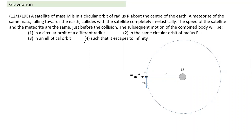This is a qualitative question — no calculation necessary. The velocity after collision becomes v₀ divided by root 2. Compared to orbital velocity, this velocity has become even lesser. So the option of a circular orbit of different radius is ruled out: in a circular orbit, velocity at any point must be tangential and perpendicular to the radius vector — it cannot have a component directed towards the center. Any circular orbit option is out.